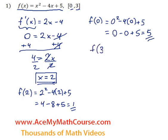How about f of 3, 3 squared minus 4 times 3 plus 5, 3 squared is 9, negative 4 times 3 is negative 12, plus 5, we're going to get positive 2.